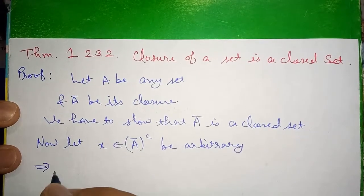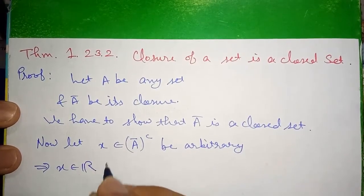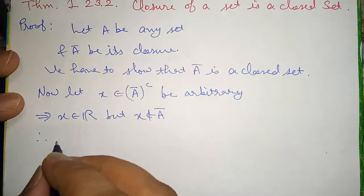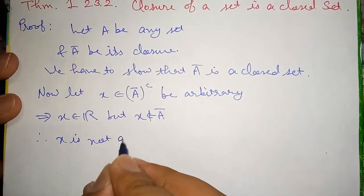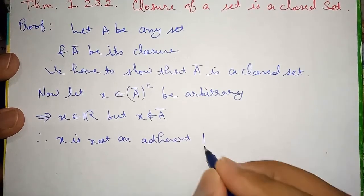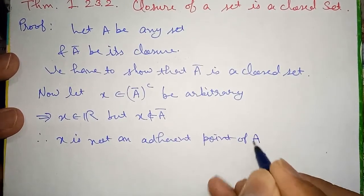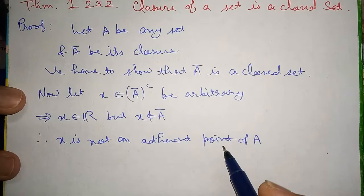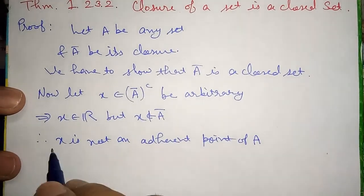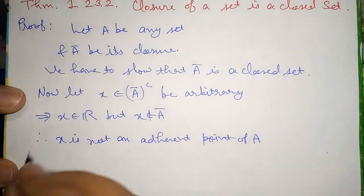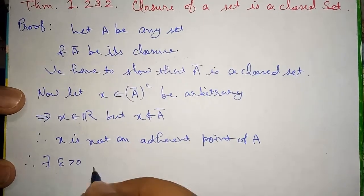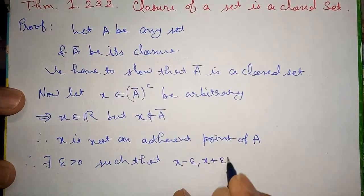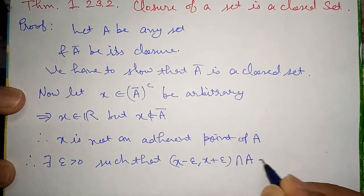This implies X belongs to ℝ but X does not belong to A-bar. Therefore, X is not an adherent point of A. Since X is not an adherent point, there exists an epsilon greater than zero such that the intersection of (X − ε, X + ε) with A is equal to the empty set.